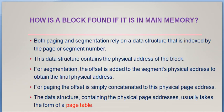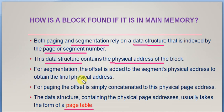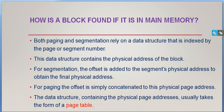How is a block found or identified if it is in memory? We can use paging and segmentation with the support of a data structure indexed by page or segment number. If using paging, we use a page table; if using segmentation, we use a segment table. This data structure contains the physical address of the block. In segmentation, the offset is added with the physical address to obtain the final physical address. In paging, the offset is simply concatenated. These structures are called page table and segment table respectively.